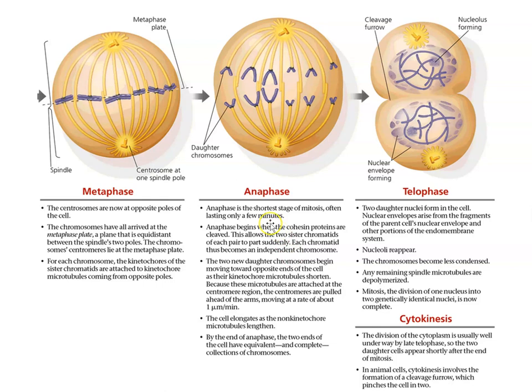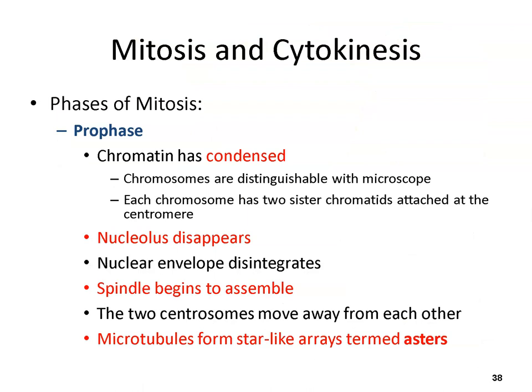Anaphase — A for away. It's a shorter stage of mitosis, often only lasting a few minutes. This is when the spindle starts to degrade and the sister chromatids separate, becoming chromosomes moving toward the poles of the cell where the centrosomes are. Then telophase — a cleavage furrow starts developing in animals. Nucleoli reappear, chromosomes become less condensed and start to uncoil. Finally, cytokinesis is the division of the cytoplasm.